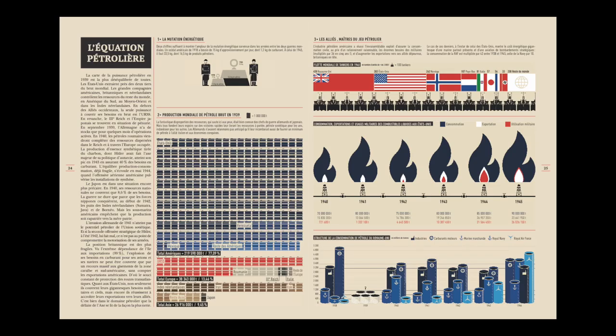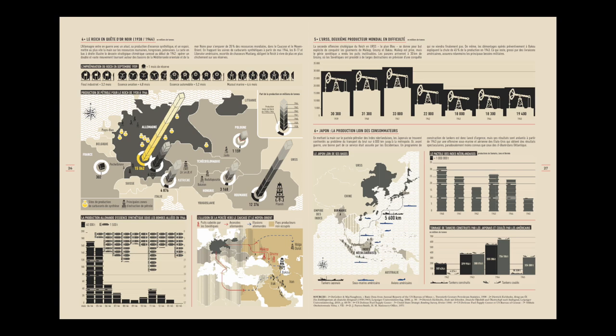Il y a un propos sur 53 thèmes — 53 chapitres en fait — organisés en quatre grandes parties. Chaque partie est introduite, chaque thème est introduit par un texte général, et chaque graphe est commenté de façon à ce que le lecteur puisse se repérer sur ce qu'il peut en tirer. Mais on ne dit pas tout : les graphes sont tellement riches que chacun peut se faire son opinion.